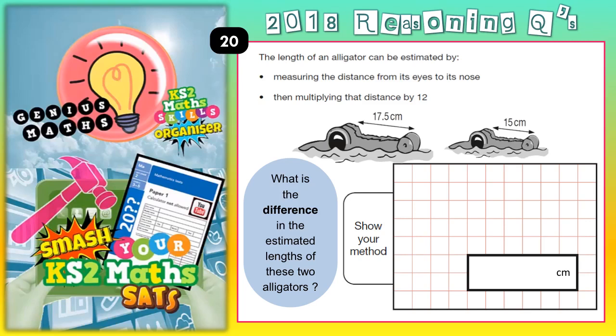Welcome Satsbusters to question 20, and this one's all about alligators. Now there are actually two ways of doing this question — one is a slow way and one is a quick way. We're going to do the slow way first and then we'll have a look at what would have been a quick way. We want you to see if you can spot what the quick way might be whilst we're doing the slow way.